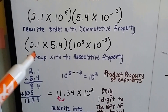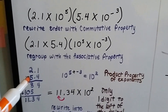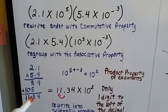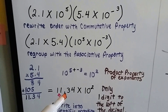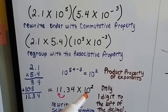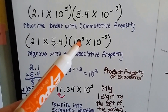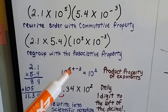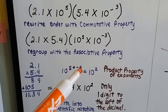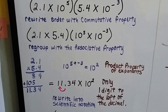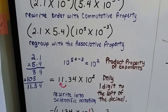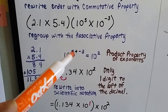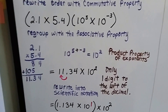We do our multiplication of 2.1 times 5.4 and we get 11.34, giving us 11.34 times 10 to the second. We do positive 5 minus the negative 3 and we get a 2 — that's the product property of exponents, which says that we can add the exponents.